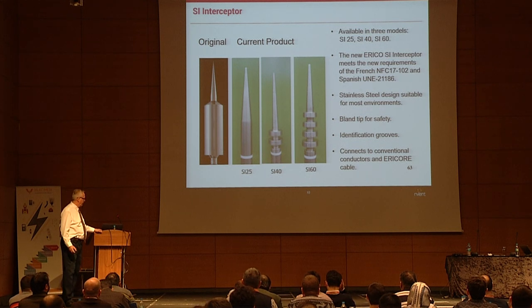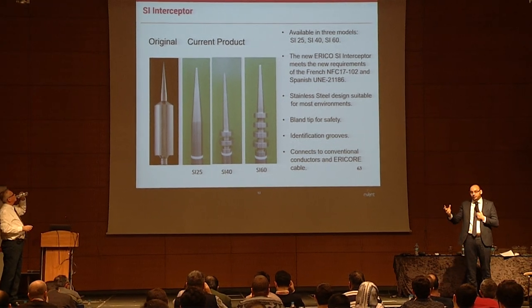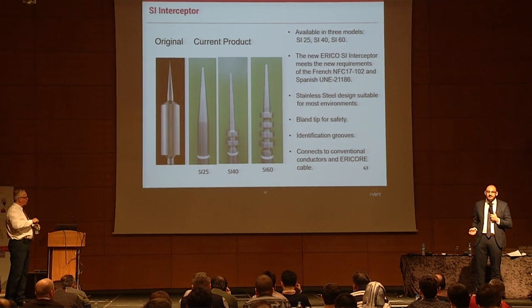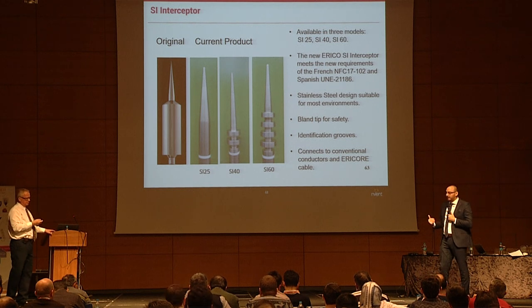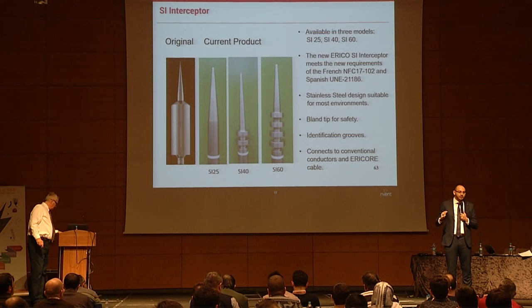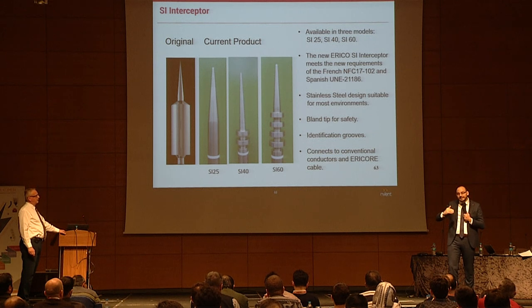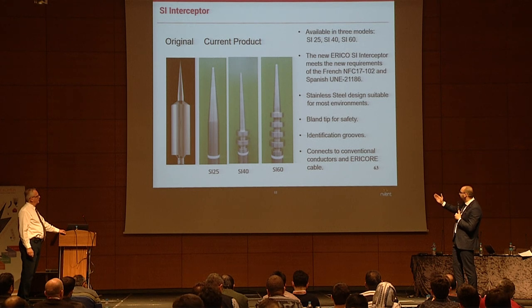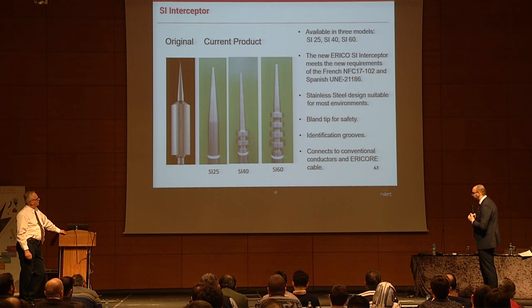IEC normunda pasif yakalama uçları, izoleli iletkenler, yuvarlanan küre metodu, koruma açısı yöntemi, separation distance — bunların hepsi IEC 62305'te geçiyor. Ülkemizde NFC 17102, yani aktif paratonel %90 oranında kullanılıyor. IEC normları doğru olmakla birlikte, NFC'de neler anlatılıyor — early streamer sistem hakkında Martin biraz bahsedecek. Bu IEC normundan farklı olarak Fransızların NFC 17102 standardı.